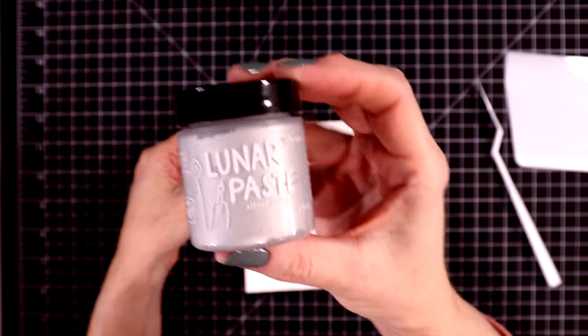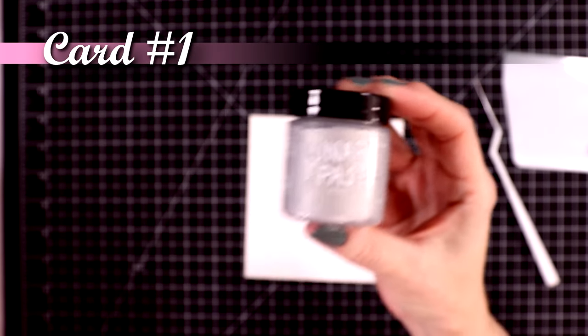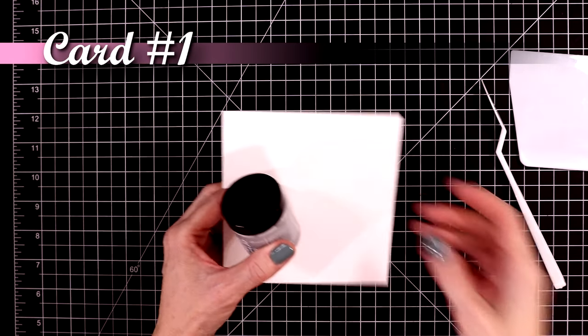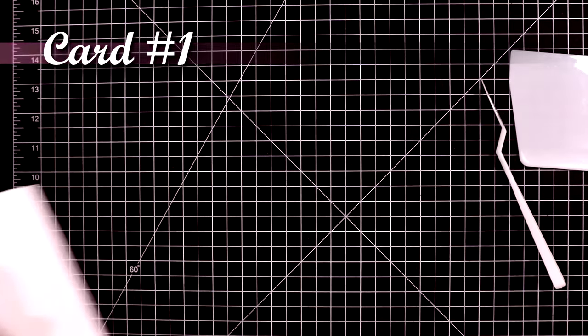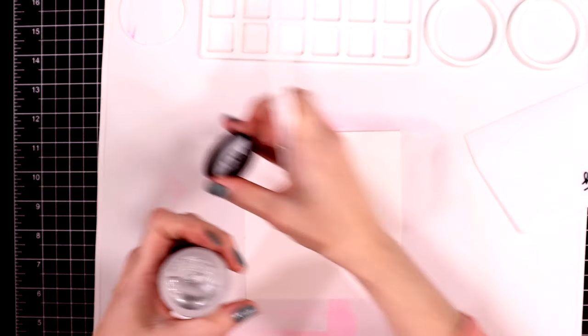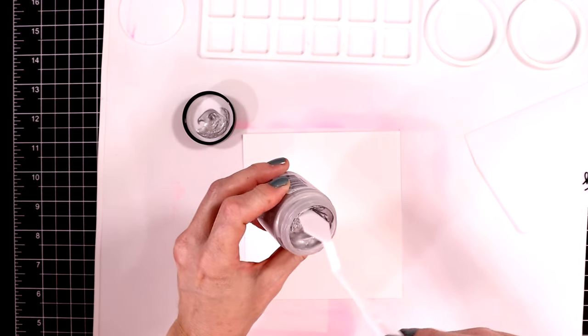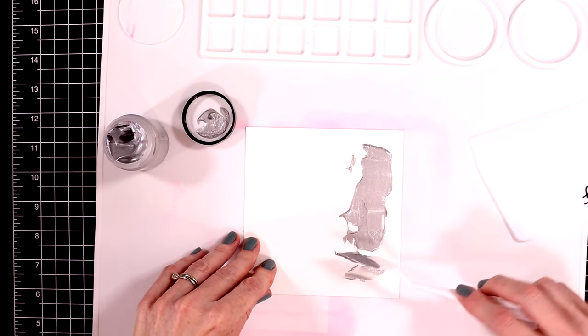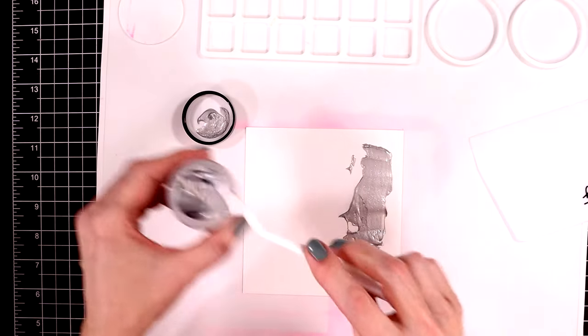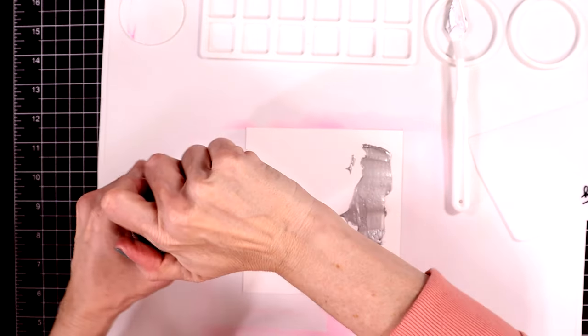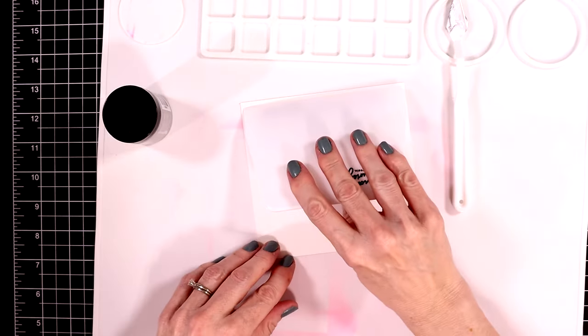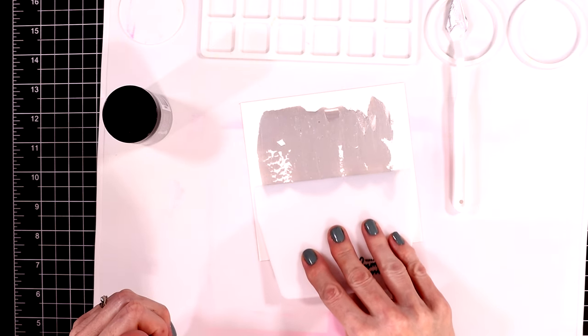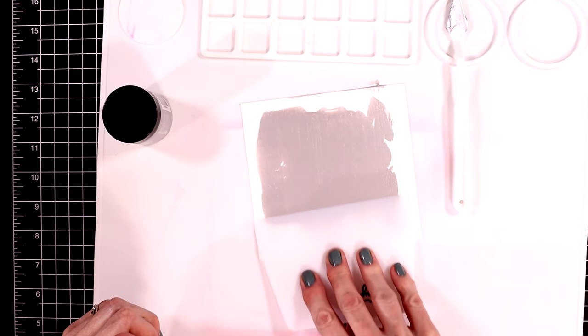So let's start off with card number one. I'm using some lunar paste, this is silver. It's kind of new from Simon Hurley, but I love this stuff because it's going to give me the perfect look and texture to cut out the metal parts of these tools with. I just have a piece of Neenah Solar White, I believe this is the 80 pound cardstock. I'm just going to put a stripe down the side of this paper and then draw it out so that it is flat and it completely covers this paper.